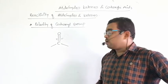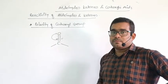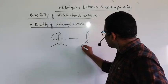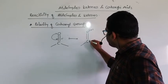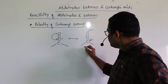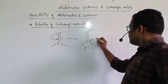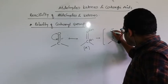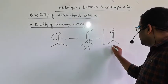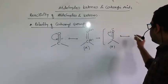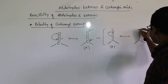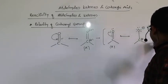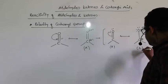Because the pi electron density shifts towards oxygen, we can show partial negative charge on oxygen and partial positive charge on carbon — this is structure A. In structure B, we show oxygen with its two lone pairs. If we shift the pi electrons completely towards oxygen, the structure shows oxygen acquiring full negative charge and carbon acquiring full positive charge — this is structure C.